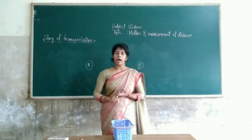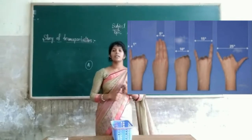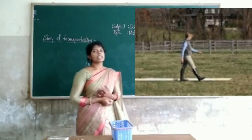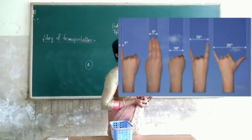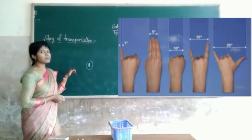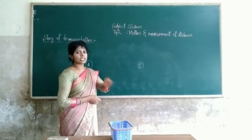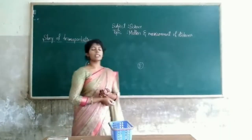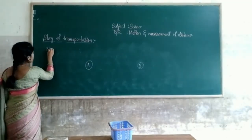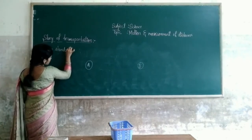Some people have a long foot step, some have a short foot step. Some hands are smaller and some are larger. So the measurement of distance is different from one person to another. This set of measurements we call as non-standard measurement.